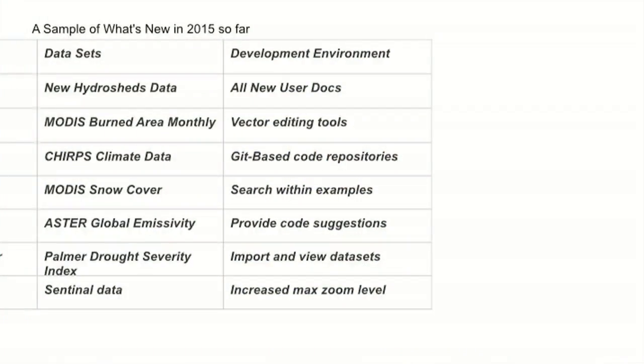Here's what we've done recently in 2015 so far — there are more things, but some highlights: we've added export video, so if you have a set of images over time and want to export them as a movie, you can. You can say, show me my town as it's changed over the last 40 years and export it. We have HydroShed's data for watershed analyses. We've updated the docs — there's a new set of docs which are very nice. And we've added a lot of support in the developer environment for people writing programs, with suggestions and new ways of sharing information.